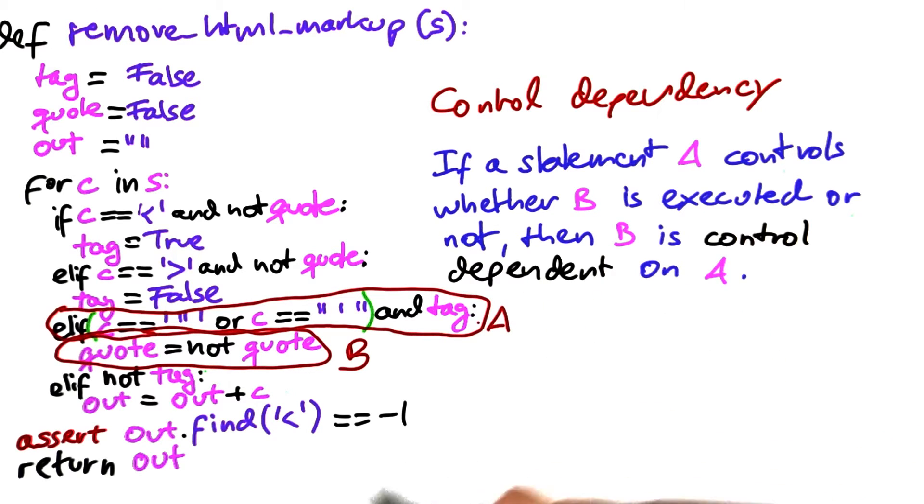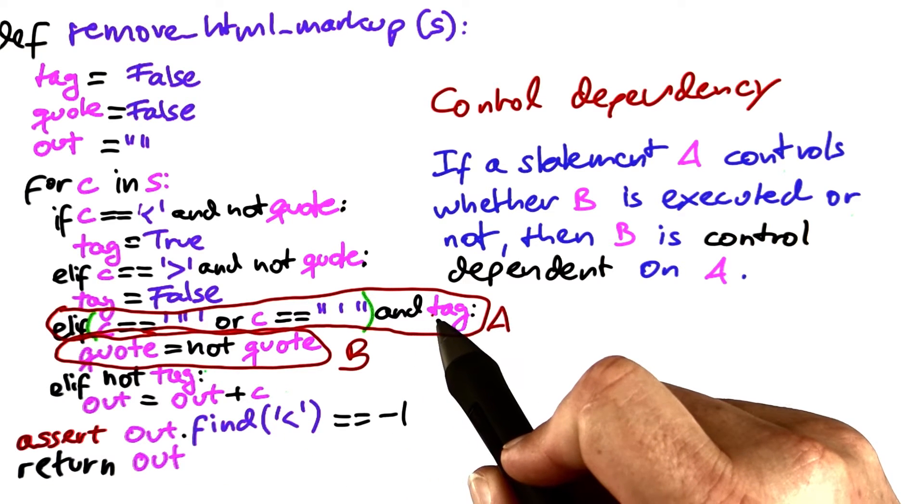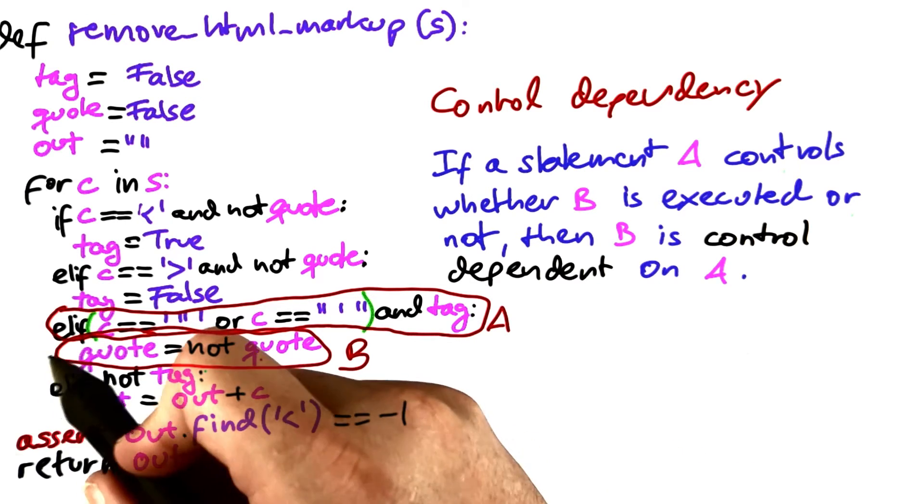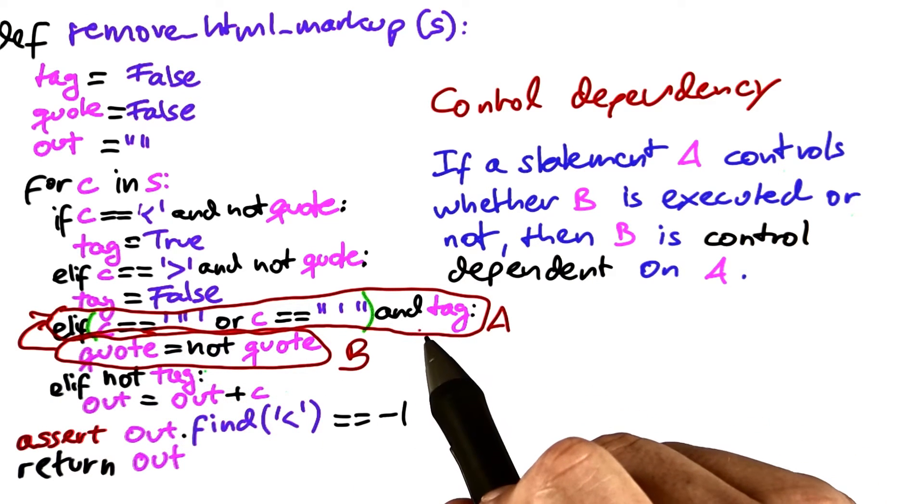In our example up here, for instance, the condition in a controls whether the statement b is executed or not. Therefore, b is control dependent on a.